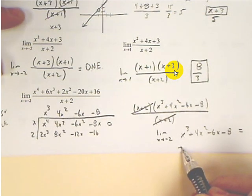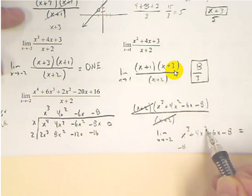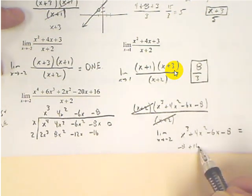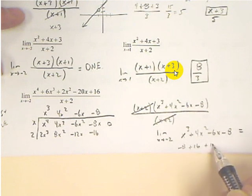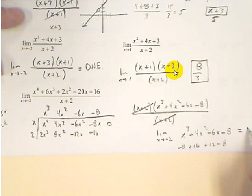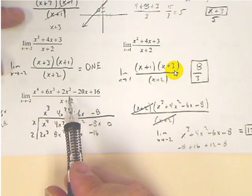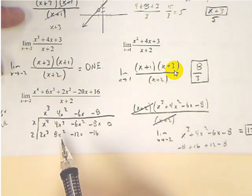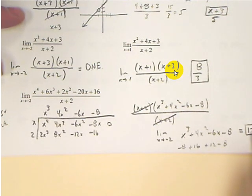So negative 2 cubed is negative 8. Negative 2 squared is 4, and 4 times 4 is 16. Negative 2 right there makes that positive 12. Bring that minus 8 over, and it looks like we have an answer of 12. So 12 is the limit of that equation at negative 2 because that's the y value of the hole.